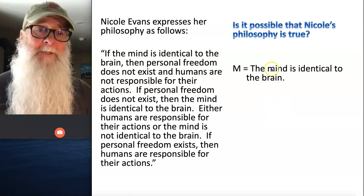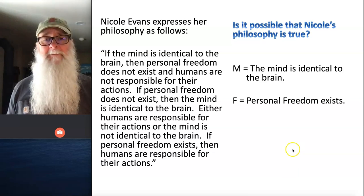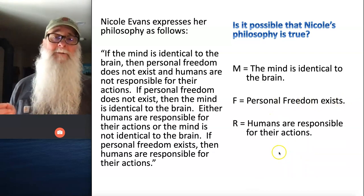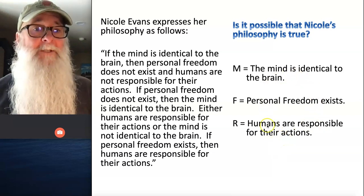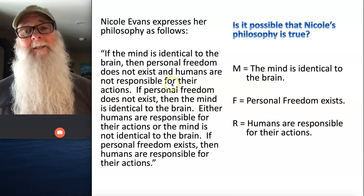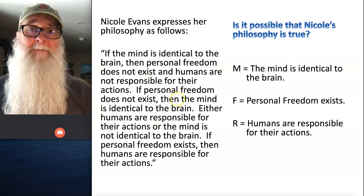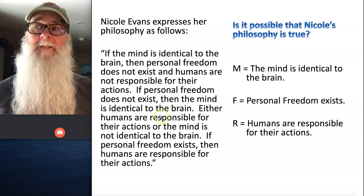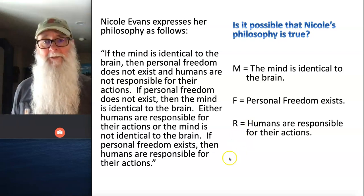We're going to use the letter M to represent the statement 'the mind is identical to the brain,' F to represent 'personal freedom exists,' and R to represent 'humans are responsible for their actions.' Note that all of these statements are expressed in the affirmative, but in the belief system we've got many expressed in the negative, which means we'll be using tildes on some of these letters.